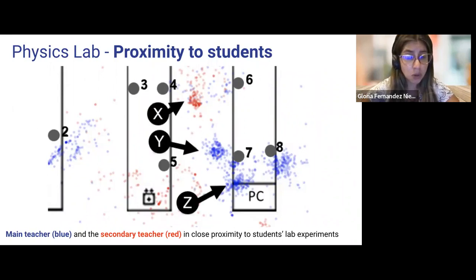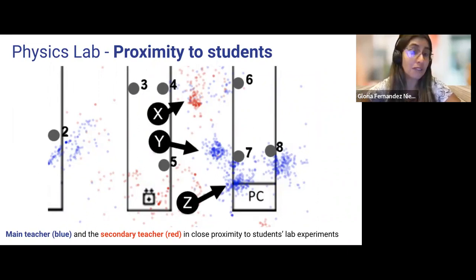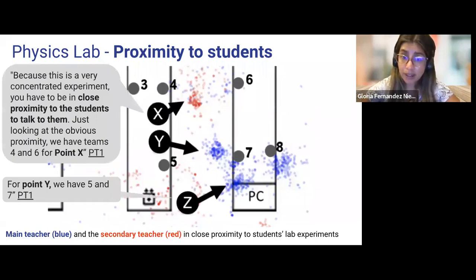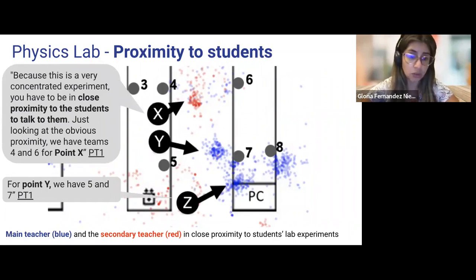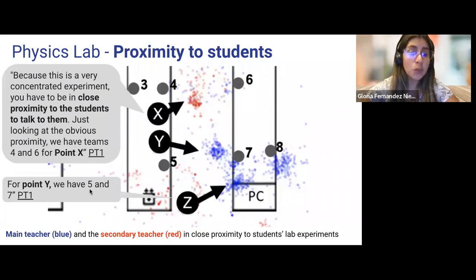When teachers explore the X and Y heat map, they assume that being in close proximity to students meant that they were probably interacting with that team. Vignette one explicitly explained that because this is a very concentrated experiment, you have to be in close proximity to the students to talk to them. Just looking at the obvious proximity, we have teams four and six for point X, and for point Y we have five and seven.